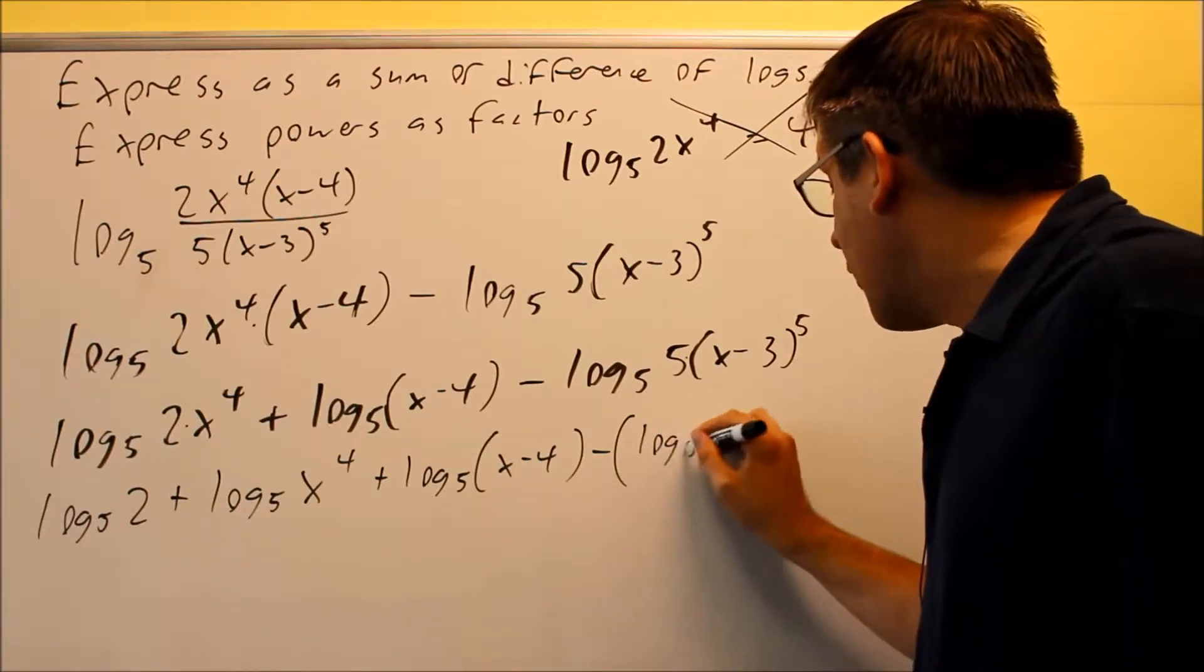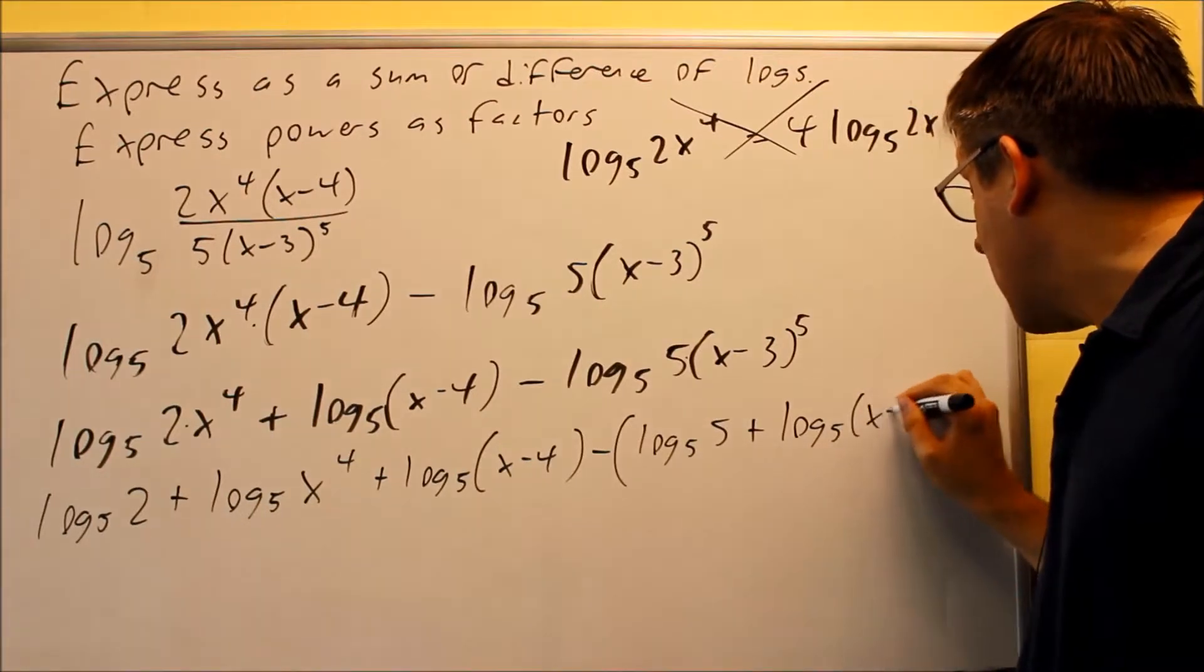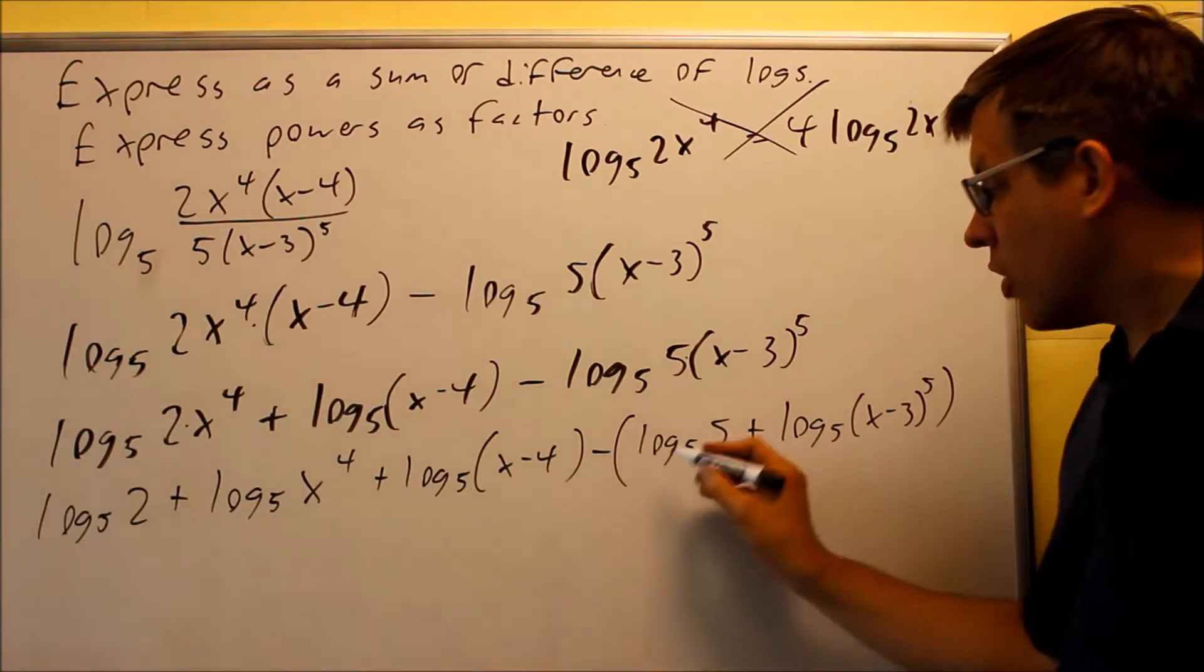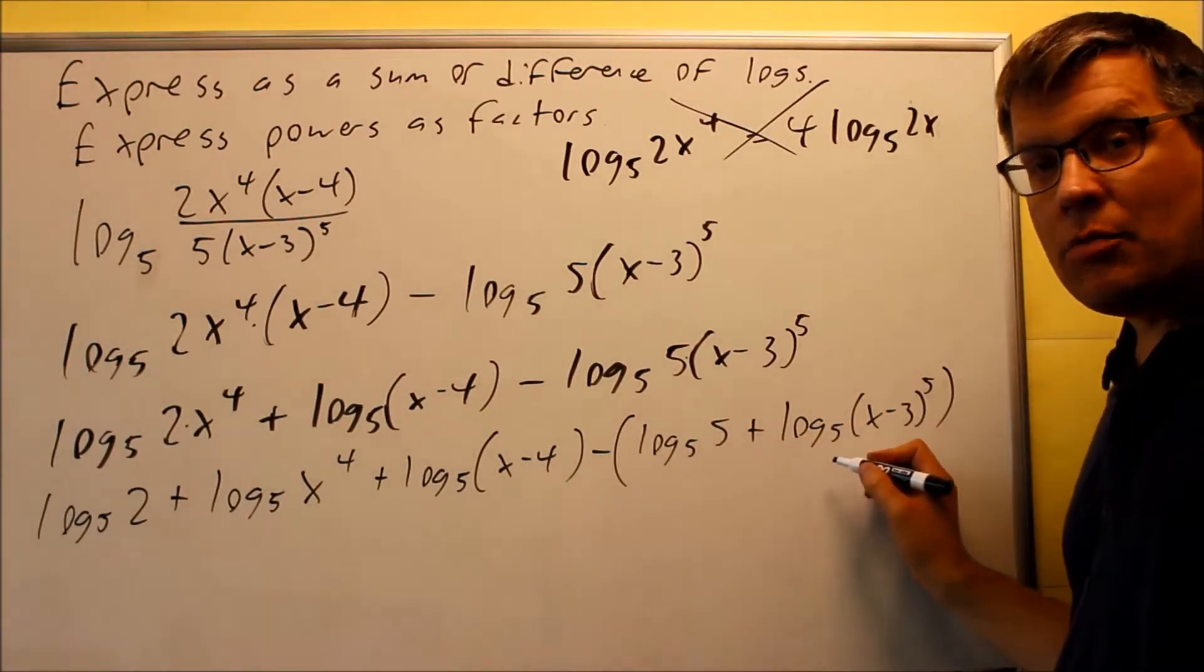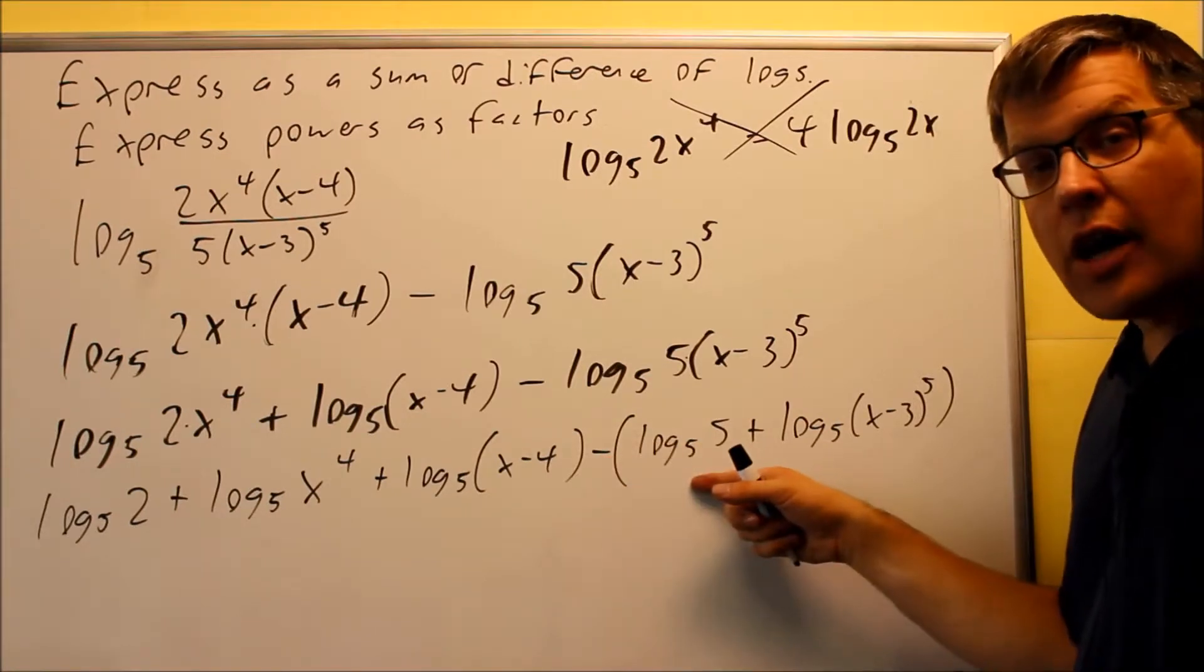So it's going to have log base 5 of 5 plus log base 5 of (x minus 3) to the 5th power. We have to keep it all inside the parentheses, because originally both of these things were on the bottom. If you don't put the parentheses there, that means that the negative would only apply to the first one, but not for the second one, and that would be incorrect.